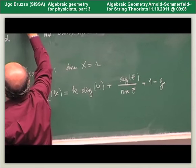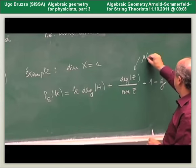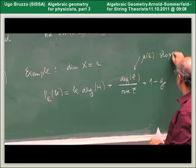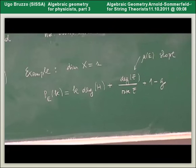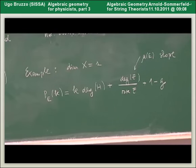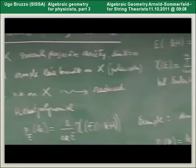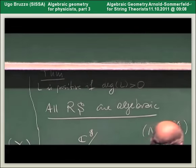The piece of degree one in k is independent from the bundle itself — it only depends on H, which is usually called a polarization. The middle term, the degree of E divided by its rank, is called the slope of the vector bundle, denoted mu(E).